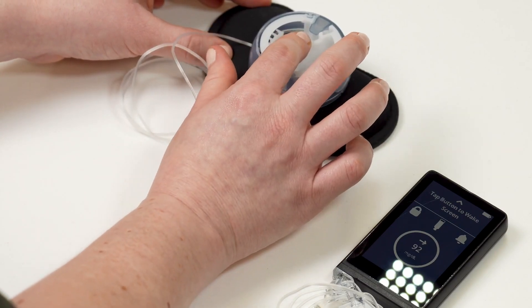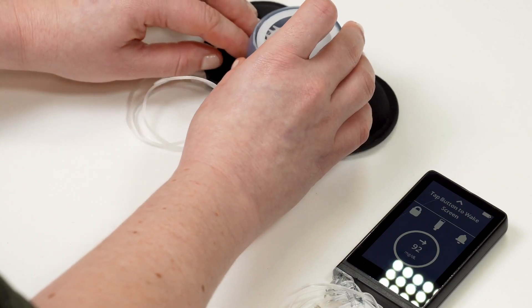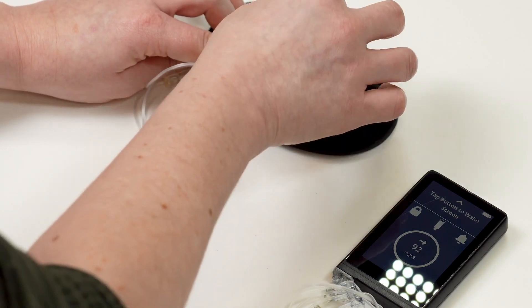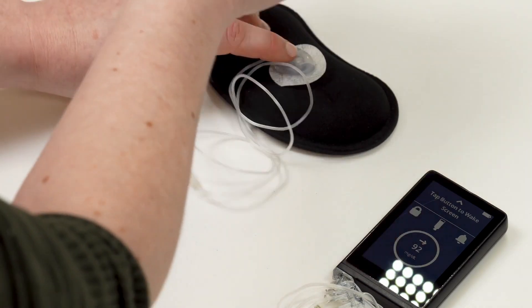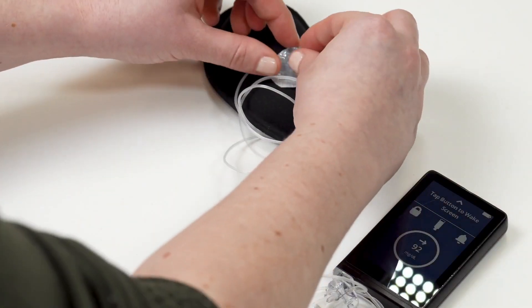Once it is inserted, gently push on the white handle of the inserter to help secure your infusion set. Grasp the handle of the inserter and pull straight backwards to remove the needle. Rub around the edge of the adhesive to make sure the infusion set is secure.